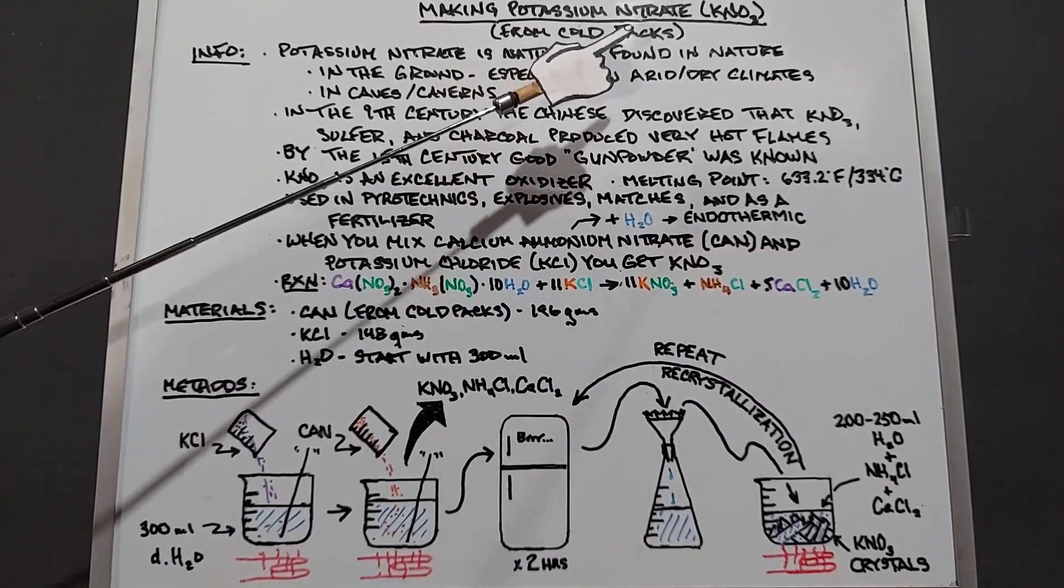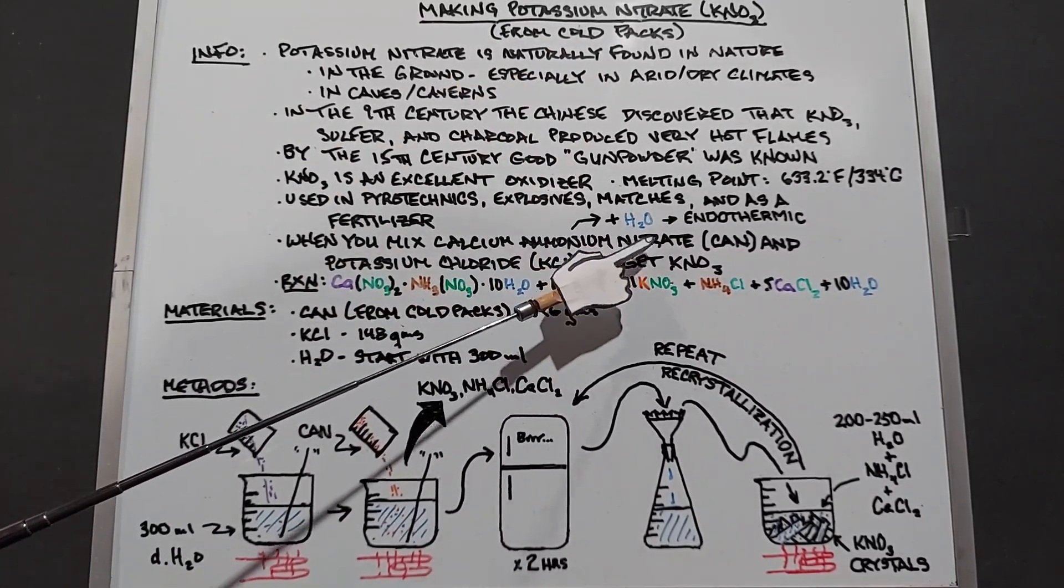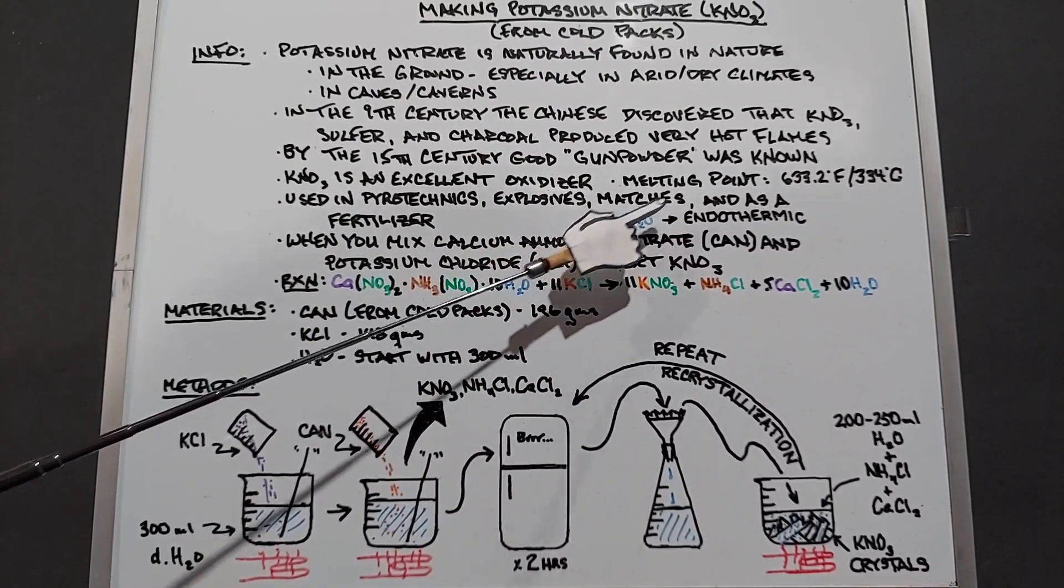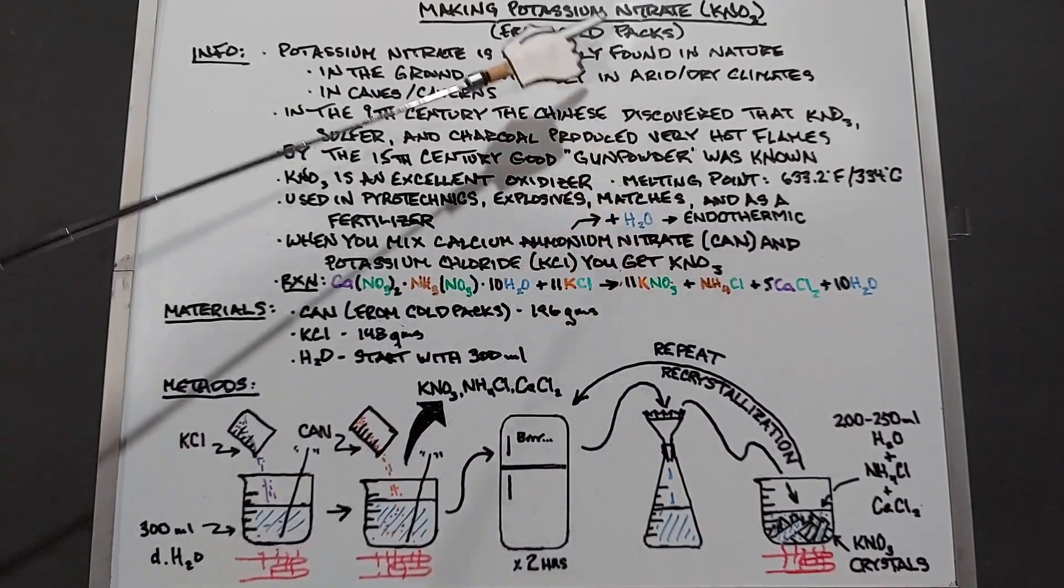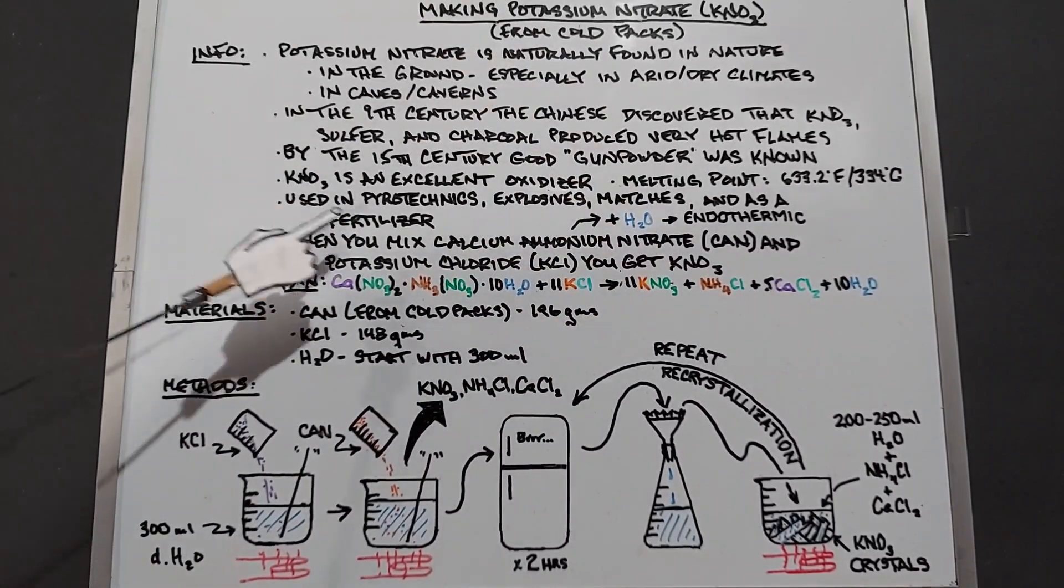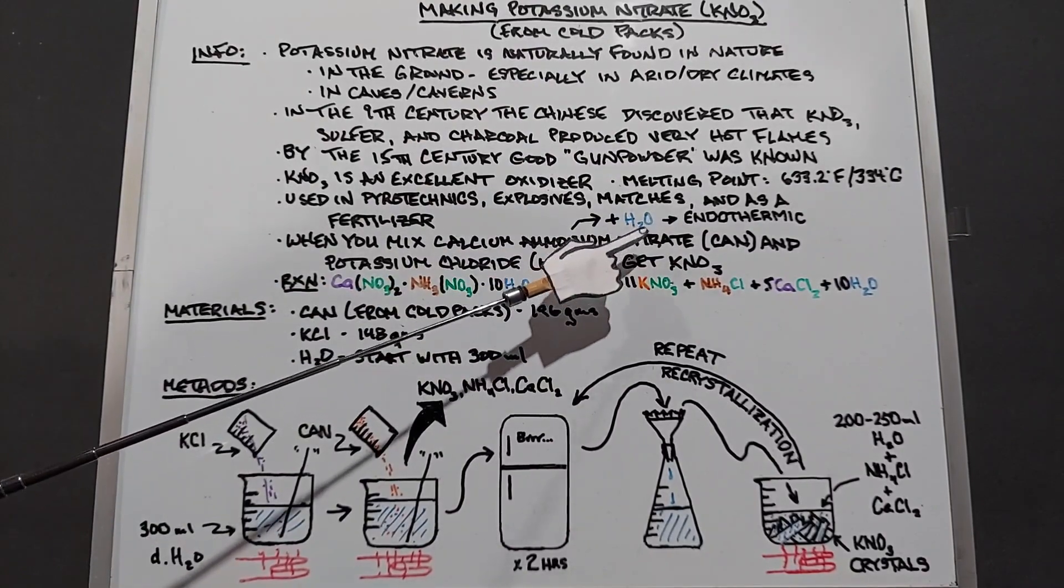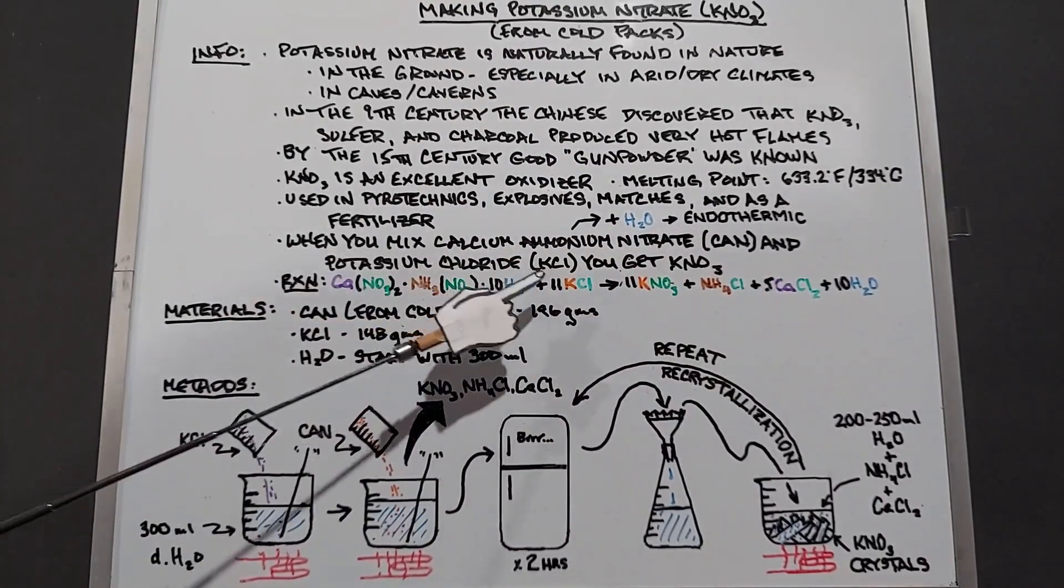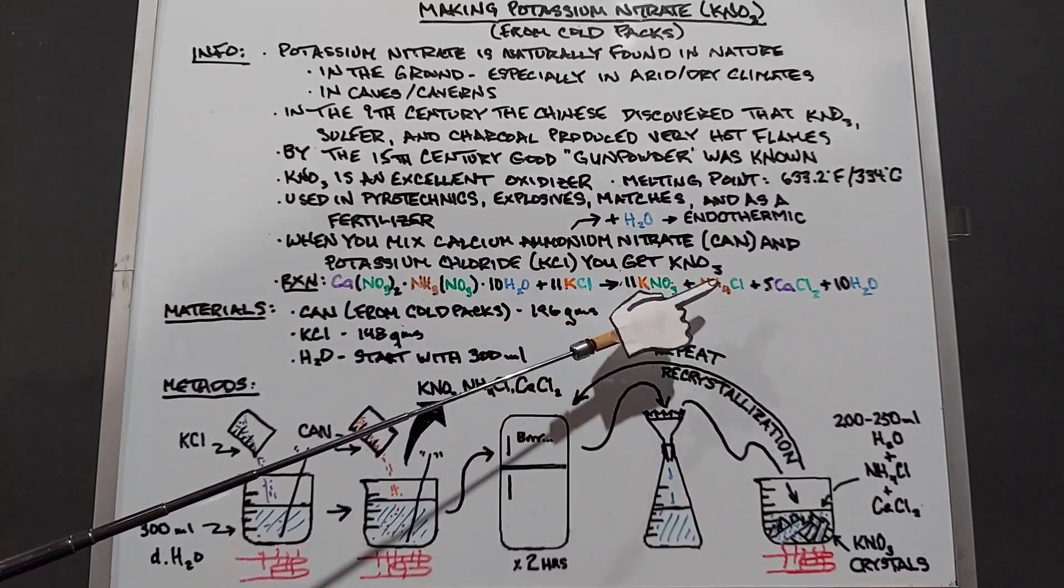Inside of these cold packs often you'll find calcium ammonium nitrate, and you mix that with some water, you get an endothermic reaction, which is why they're in the cold packs. When you mix this calcium ammonium nitrate, hereafter known as CAN, with potassium chloride salt substitute, you get potassium nitrate.